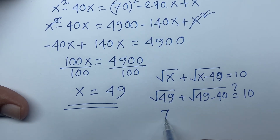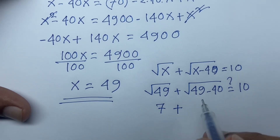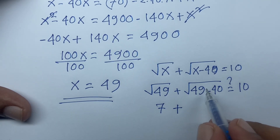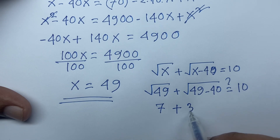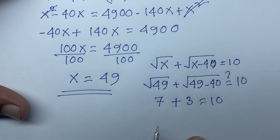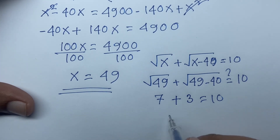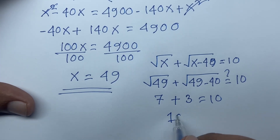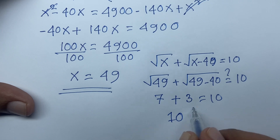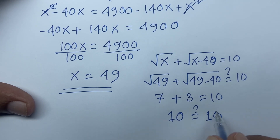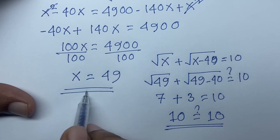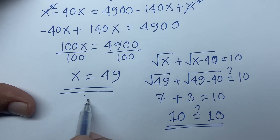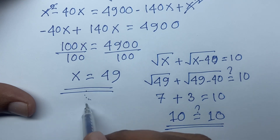Square root 49 is 7, and 49 minus 40 equals 9, so square root 9 is 3. That gives 7 plus 3 equals 10, which confirms 10 equals 10. So our final answer is x equals 49.